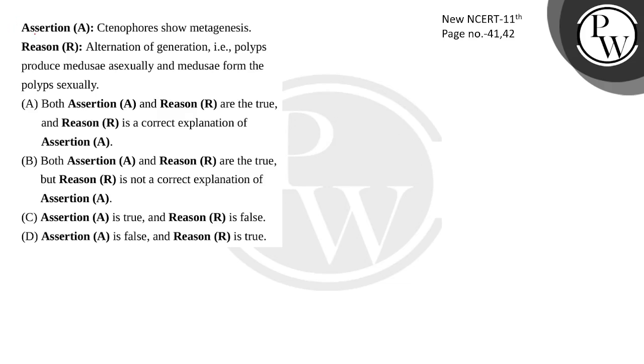Hello guys, let's read this question. Ctenophores show metagenesis. Metagenesis means alternation of generation. Alternation of generation - this property is seen in cnidarians. Cnidarians show alternation of generation.